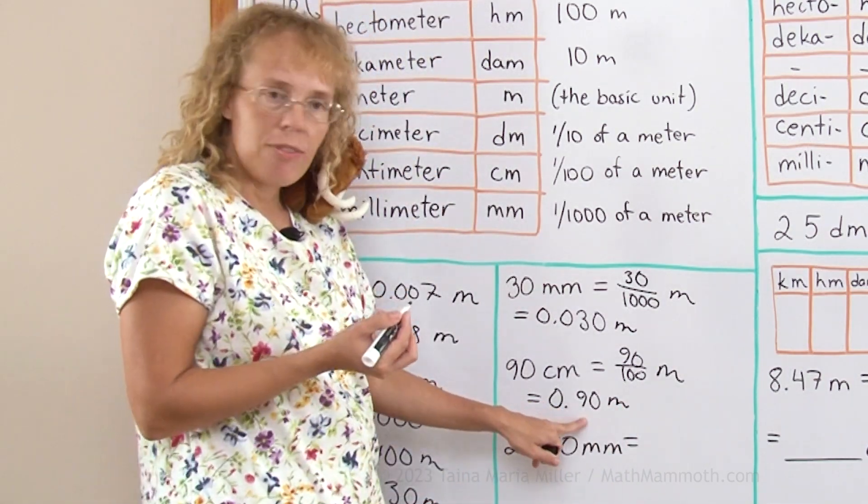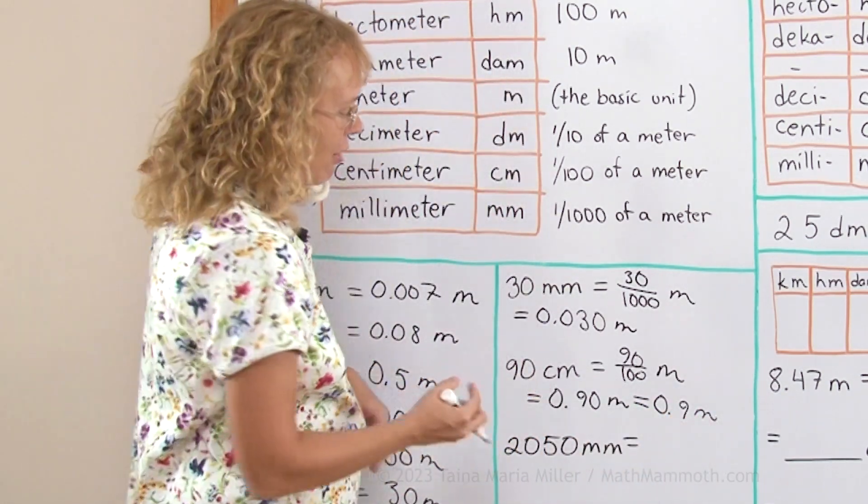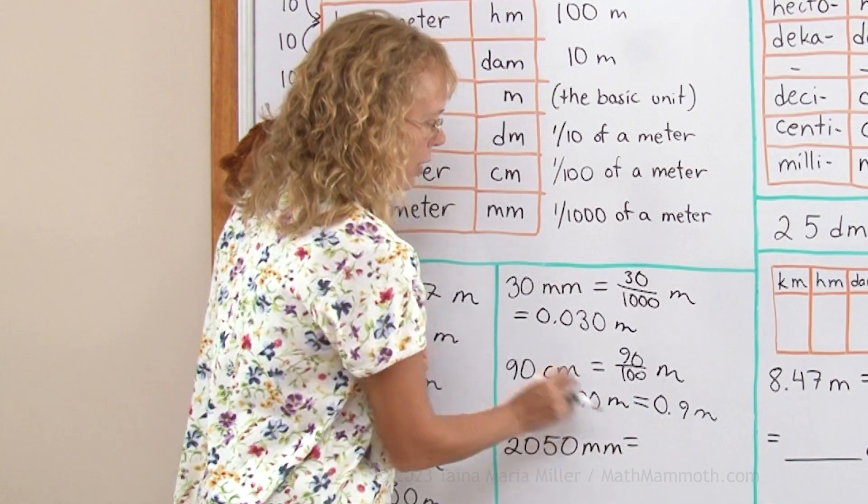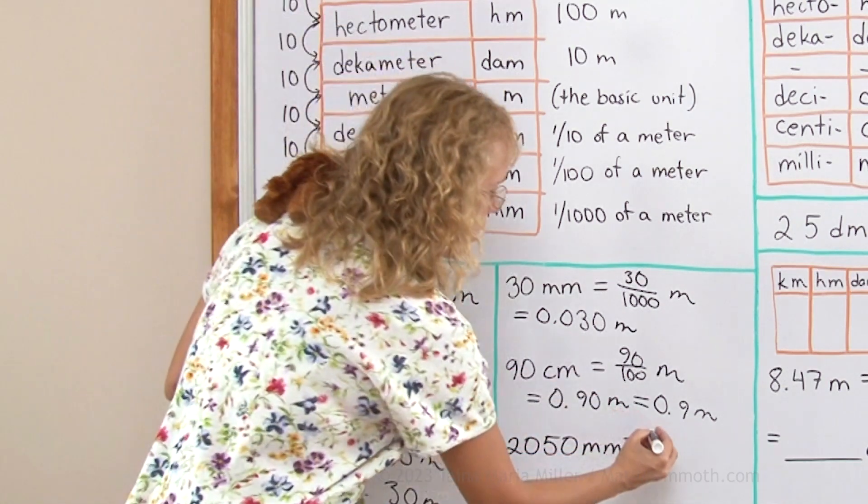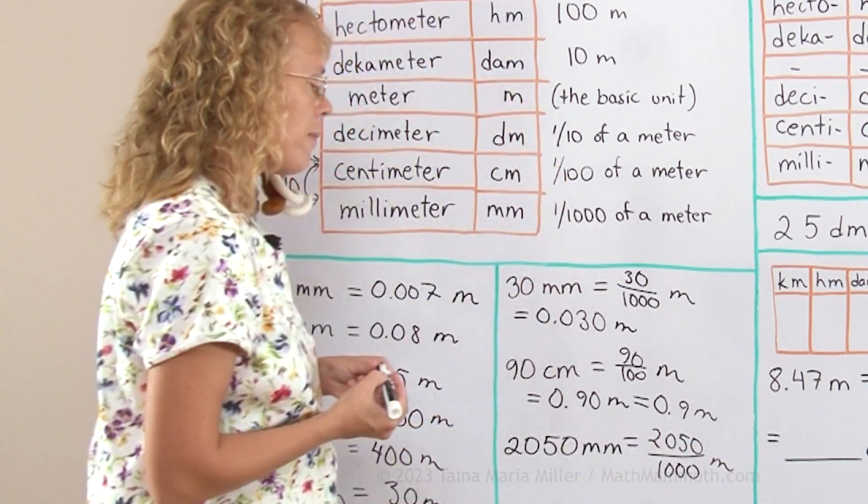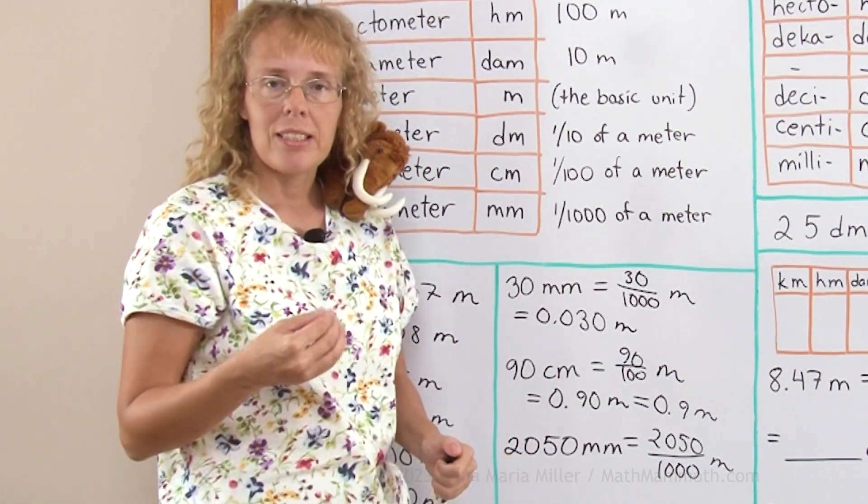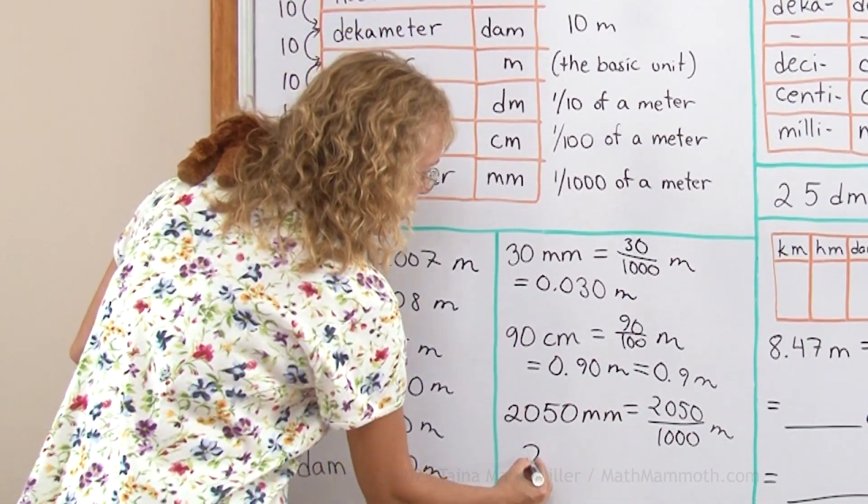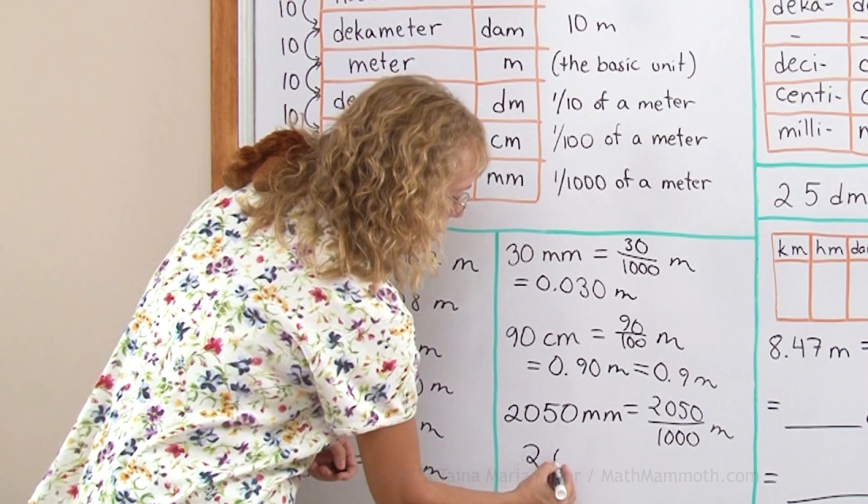And here you could simplify it to 0.9 meters if you want to or if your book tells you to. If this is actually a measurement in physical science of some sort then you would not want to drop the zero here. Two thousand fifty millimeters. Milli is a thousandth part, so 2050/1000 of a meter. Now you probably see that 2000 would have been exactly two meters. So the way I do it is I know there's going to be two meters and then the rest of the digits follow after the decimal point: 2.050 meters.